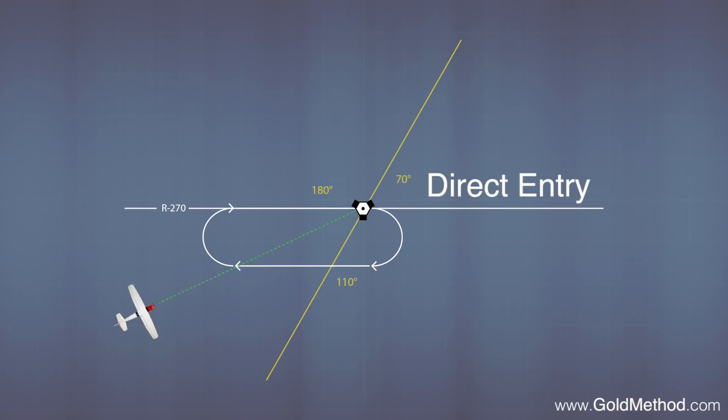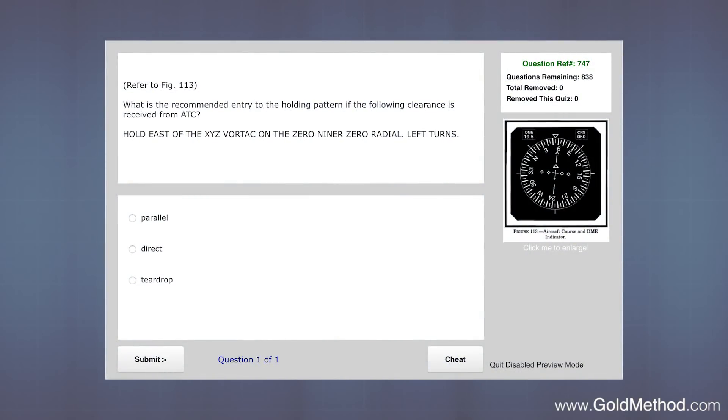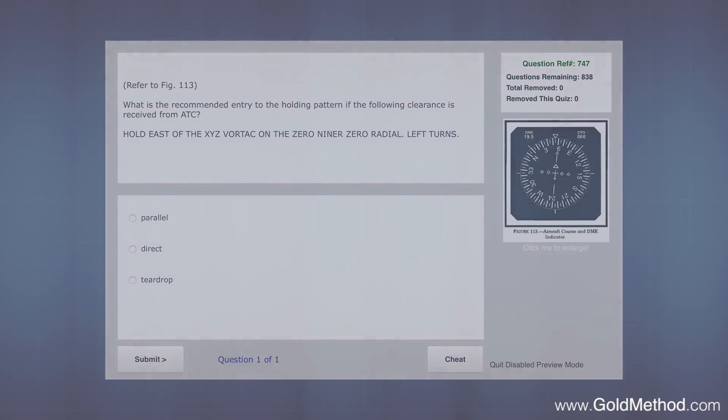Let's do one more. What is the recommended entry to the holding pattern if the following clearance is received from ATC? Hold east of the XYZ vortex on the 090 radial, left turns. So again, first we draw out the vortex and the radial that we are going to be holding on. Then we note that our clearance has given us left-hand turns. So we draw the hold like this: inbound on the 090 radial and then a left at the XYZ vortex. Now we can draw our line putting the inbound leg in the direct entry sector. So we have our hold and our sectors drawn out.